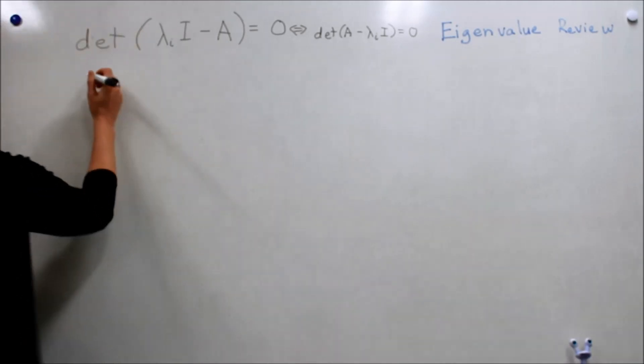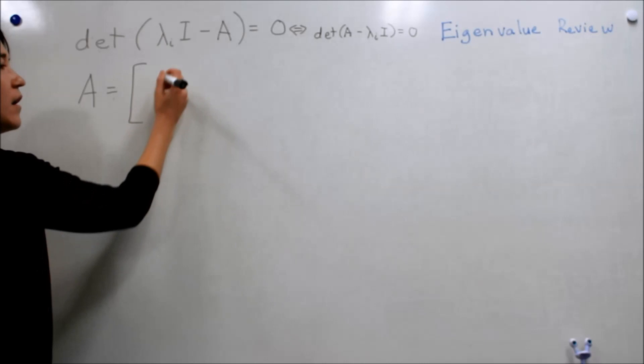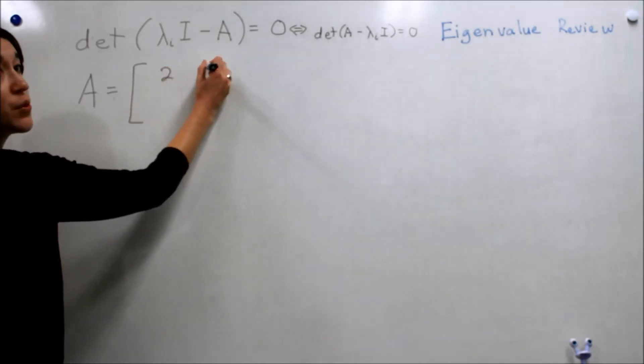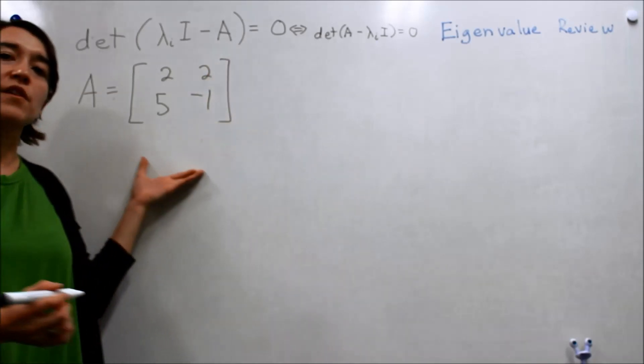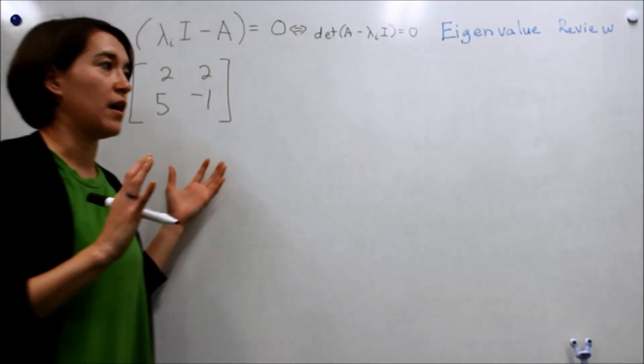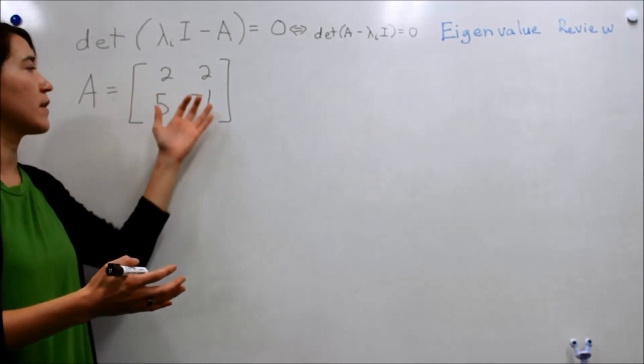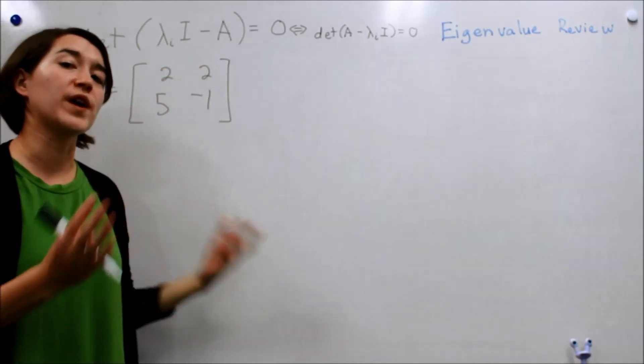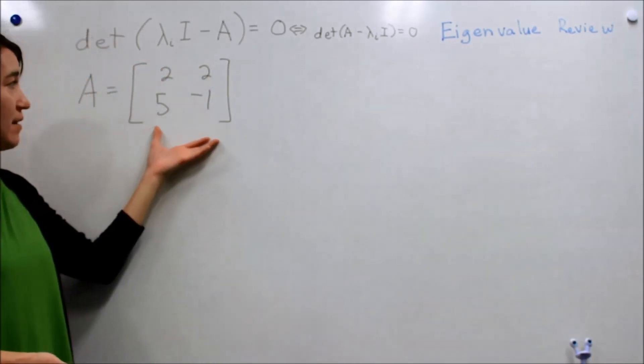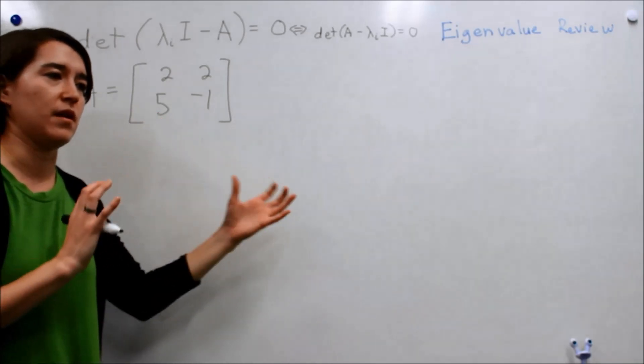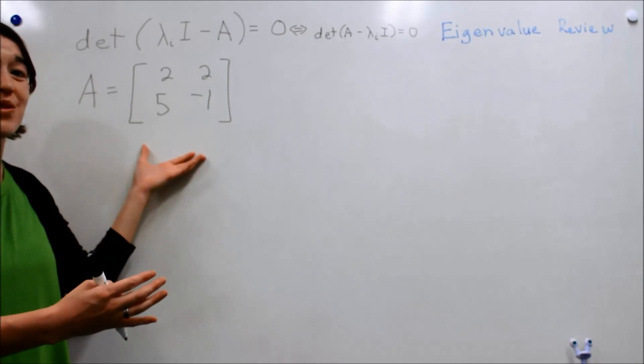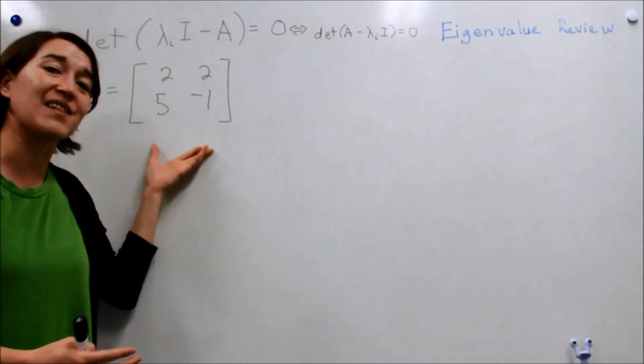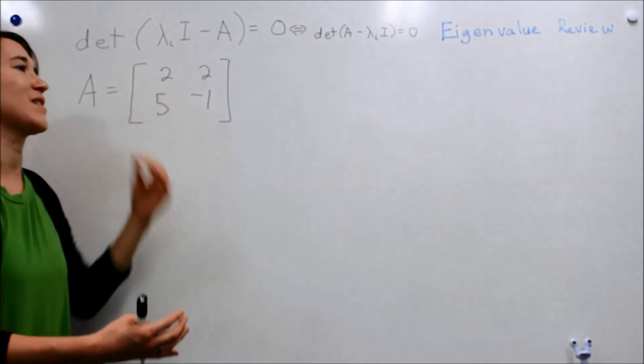Let's pick a matrix. We'll go with 2, 2, 5, negative 1. So here's our matrix. In a system, this represents different dynamics within the system. We'll get to that later, but once you've gotten your system into a state space, you'll have a nice matrix like this. Now we can do some analysis. So now let's try to find the eigenvalues for this matrix.